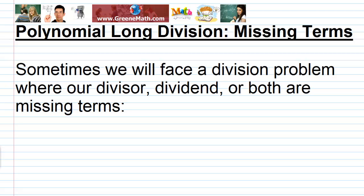In this video we're going to talk about polynomial long division where we're missing terms. We're specifically going to look at dividing into a polynomial with missing terms. Sometimes we're going to face a division problem where our divisor, dividend, or both are missing terms. When this happens we're going to use 0 as the coefficient for each missing term, because 0 acts as a placeholder here just as it does in our number system.